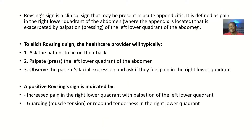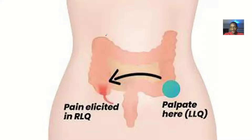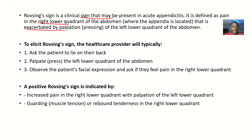The Rovsing sign is a clinical sign that may be present in acute appendicitis. It is defined as pain in the right lower quadrant of the abdomen — where the appendix is located — that is exacerbated by palpation of the left lower quadrant of the abdomen. So you have pain on the right lower quadrant, but instead of palpating the right lower quadrant, you palpate the left lower quadrant, and the patient still feels pain on the right.